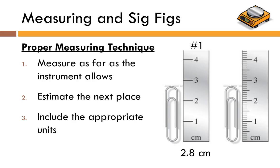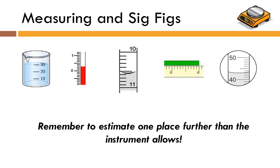Pause the video and see if you can figure out ruler two. On ruler two, we can measure as far as the tenths place, so the paperclip is between 2.7 and 2.8 centimeters. Estimating the next place — the hundredths place — I get 2.71 centimeters. You might not agree with that last digit, but as long as the hundredths place is present, that's fine. This is a very important concept and one that will be used throughout the semester.